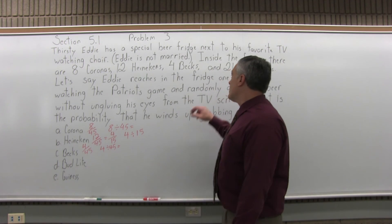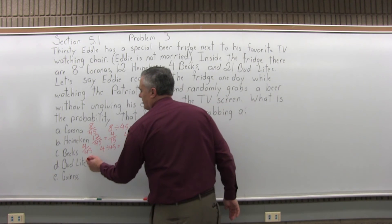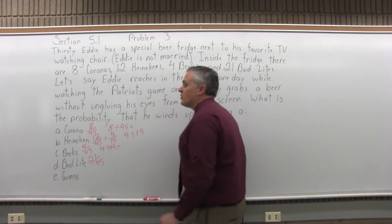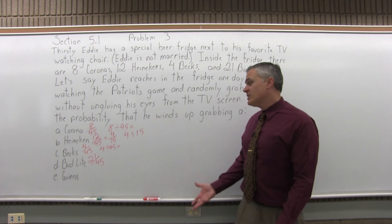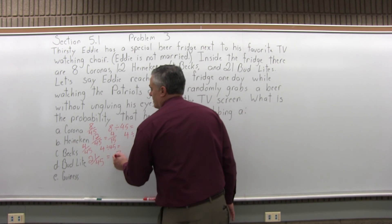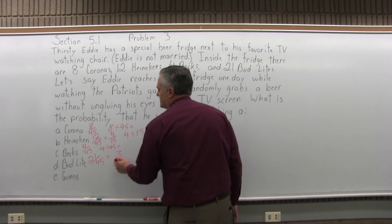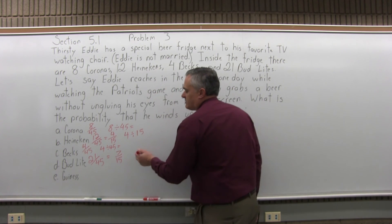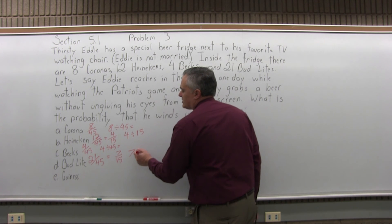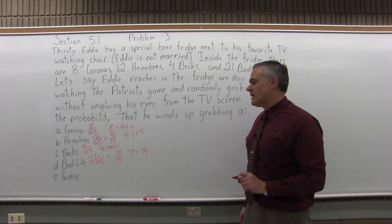How about a Bud Light? There are 21 of those out of 45 beers altogether, so the probability would be 21 over 45. This can also be reduced by 3 — 3 goes into 21 seven times and 3 goes into 45 fifteen times, giving 7 over 15. So it's almost 50%. Again, if you like decimals or percents better, you can divide it out with your calculator, but you don't have to.